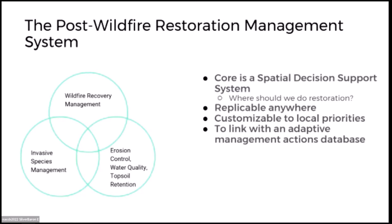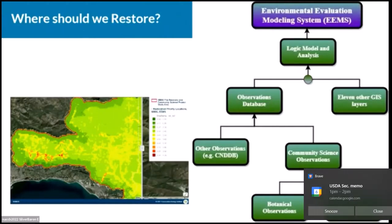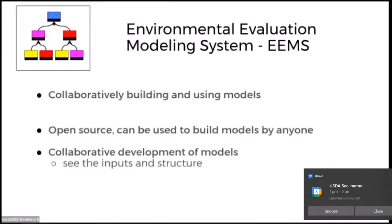Where should we restore? This is a key question. You can create maps that show good priority areas. In this case we combined citizen science data — which was really critical — with existing data to create a huge observation dataset, then combined that with 11 other GIS layers into a logic model and analysis in the Environmental Evaluation Modeling System, or EAMS.